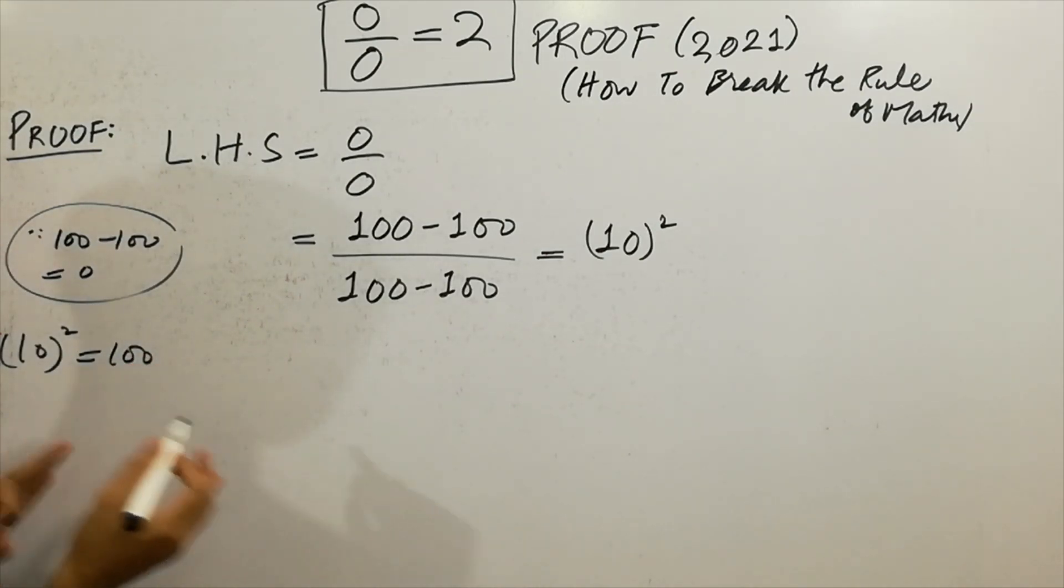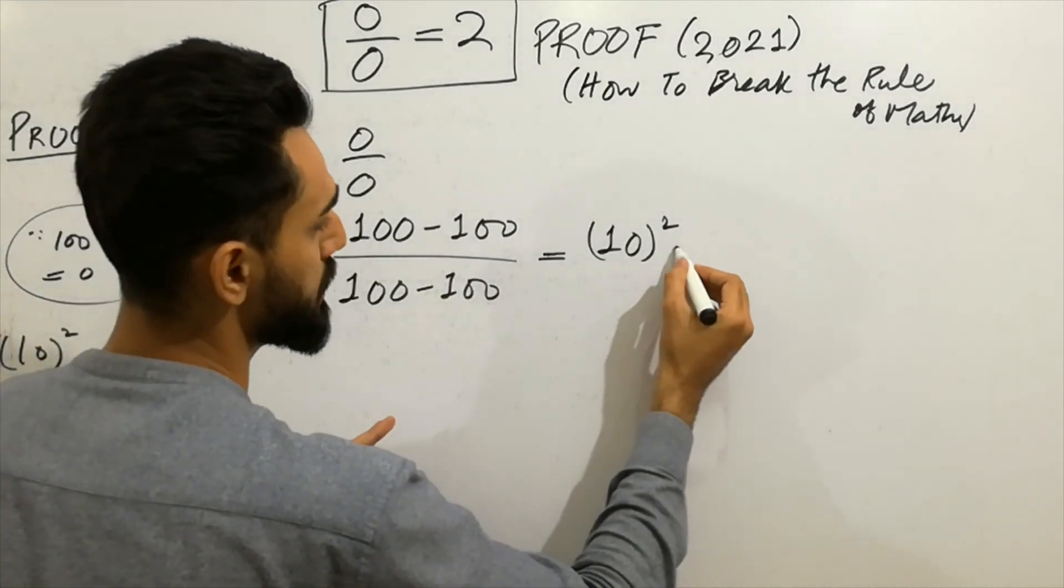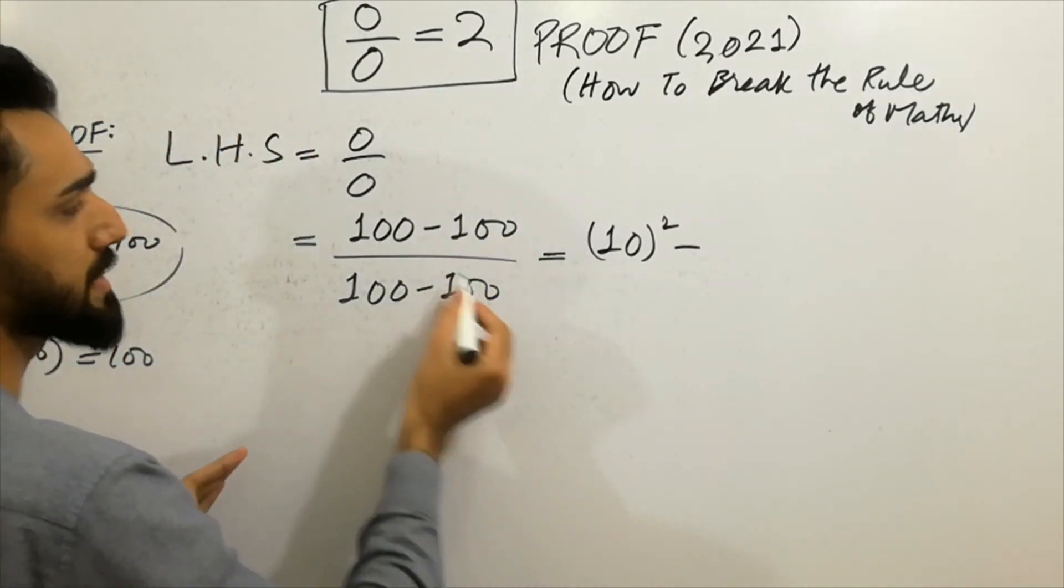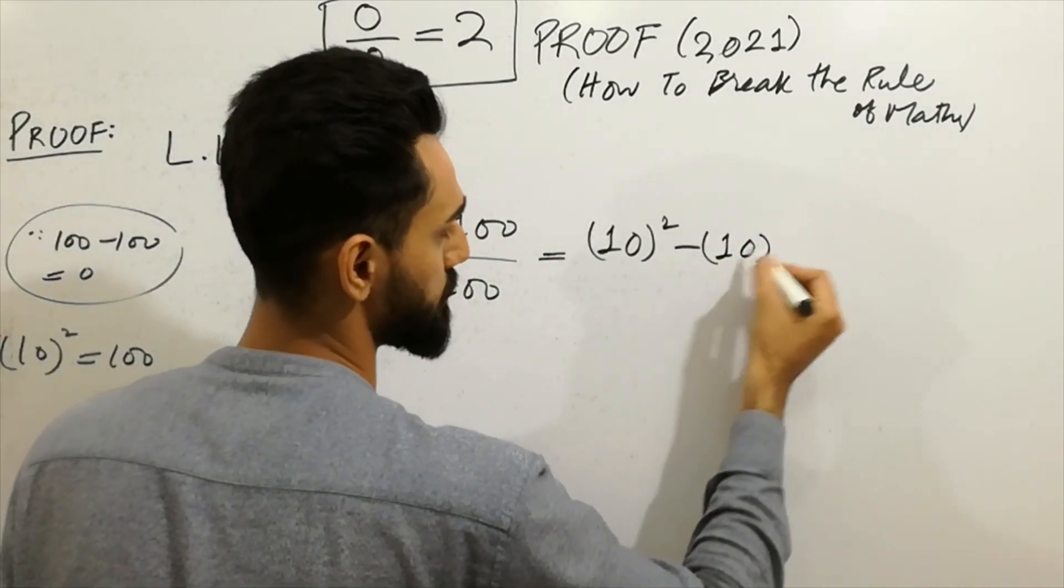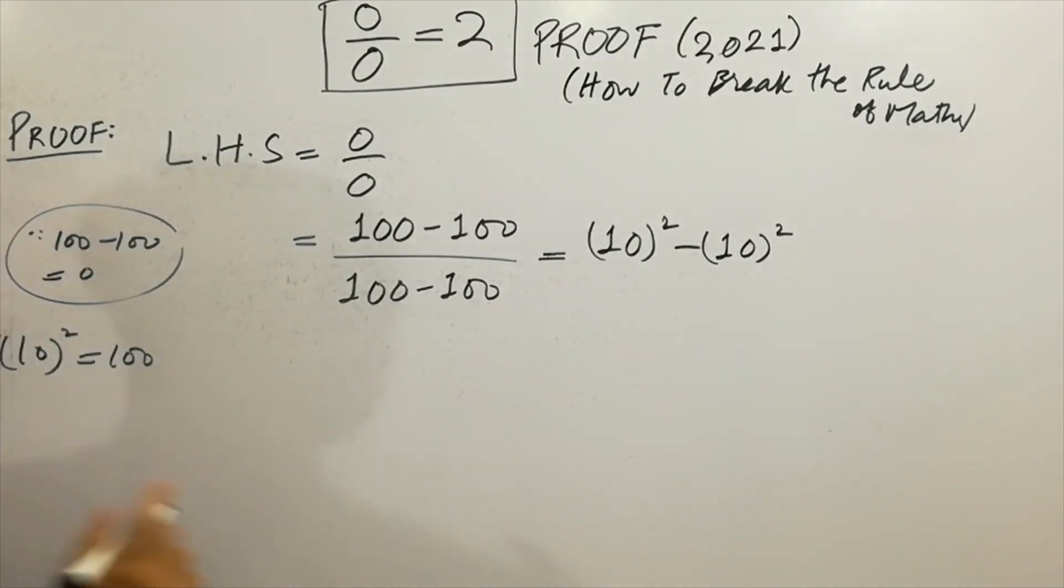So you can write here 10. 10 squared is 100. 10 squared minus this also can be written as 10 squared. I hope that you have grasped the point. And next time.